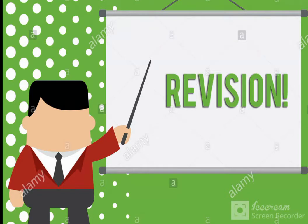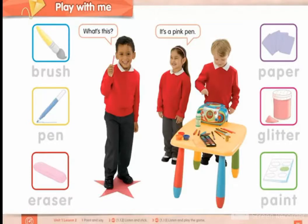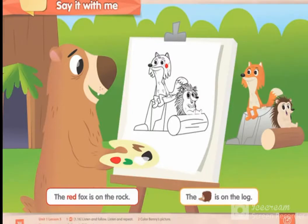In the revision session, they will repeat previous lectures, vocabulary words, and sentences. For example, the teacher will show a picture to all students and they will repeat sentences like: it is a yellow brush, it is a blue pen, it is a pink eraser.